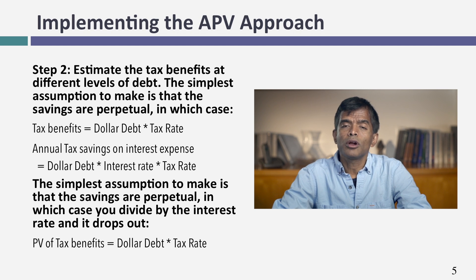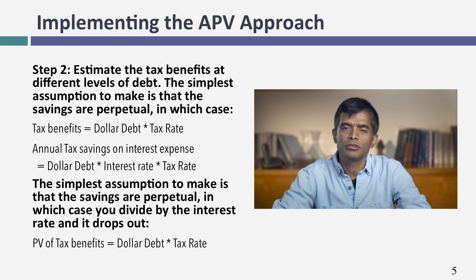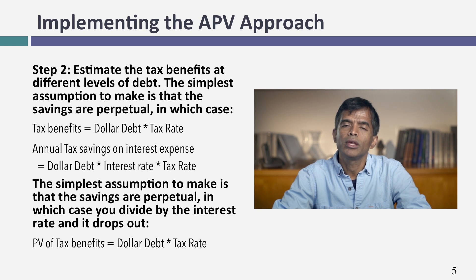The second step is to estimate the present value of the tax benefits you get from the debt you're considering taking on. The tax benefits of debt flow from the interest expenses you have and the marginal tax rate you face as a company. Take the present value of those tax savings over time — that's the present value of the tax benefits added on from debt.